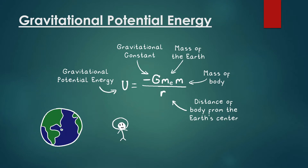First we have to talk about gravitational potential energy. We have this gravitational constant, and this is the gravitational potential energy — we see that we have negative gravitational constant times the mass of the Earth, mass of the body, and how far it is from the Earth's center. The part that most students get confused about is this negative here. Why is this negative? We are now putting the zero line at what we're going to be calling infinity. We're putting the zero line at infinity, and since it's below that zero line, this is why we have this negative here.